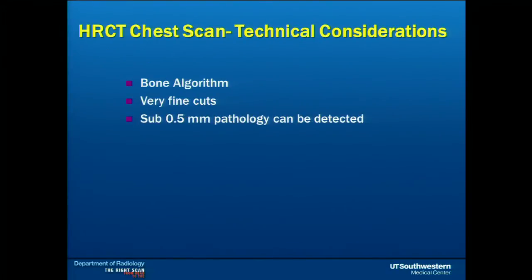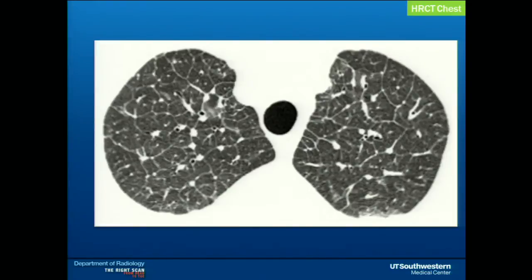Coming to high-resolution chest CT, a little about technical considerations. It is different from routine chest CT because we use a bone algorithm to get sharp and crisp images. We use very fine cuts to detect pathology that is even less than one millimeter — 0.5 millimeter.